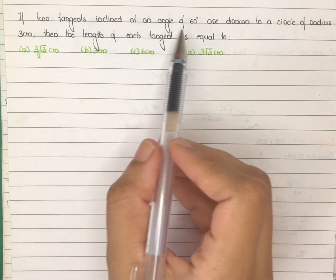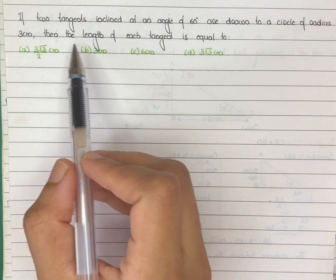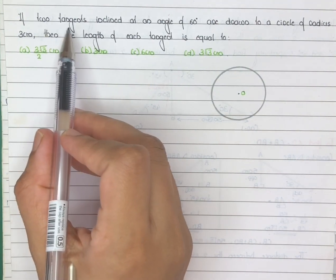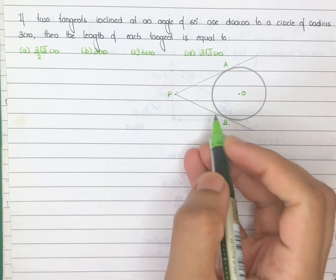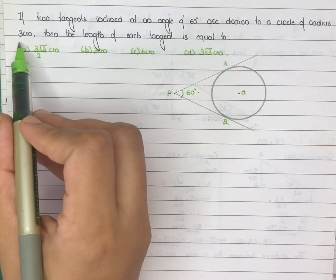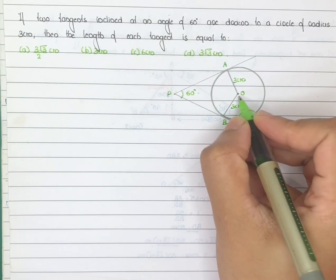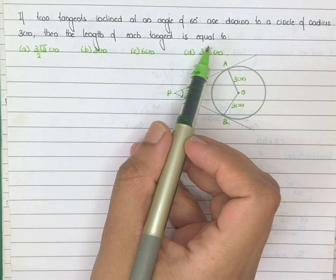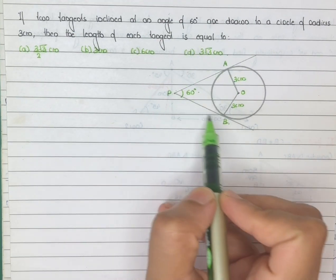If two tangents inclined at an angle of 60 degrees are drawn to a circle of radius 3 centimeters, then the length of each tangent is equal to — consider a circle with center O and two tangents PA and PB inclined at an angle of 60 degrees drawn to a circle of radius 3 centimeters. We need to find the length of PA and PB.